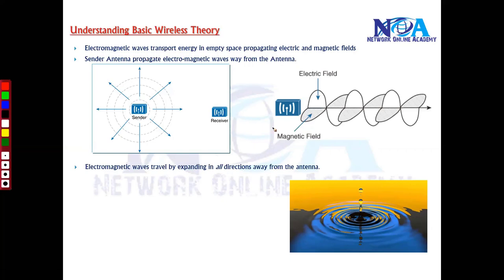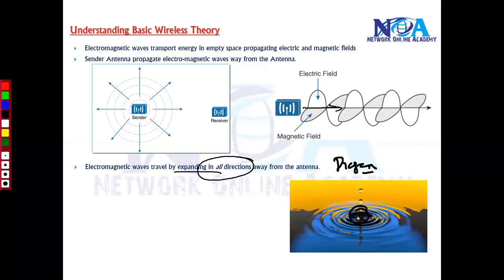One thing to understand is that electromagnetic waves don't travel in a straight line. They travel by expanding in all directions away from the antenna. You can compare this with the example of dropping a pebble into a pond when the surface is still — the pebble sets the water surface into a cyclic motion. You can correlate the same example with how electromagnetic waves expand outwards in all directions, as you can see in the figure here.